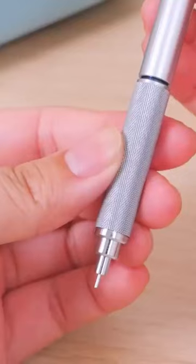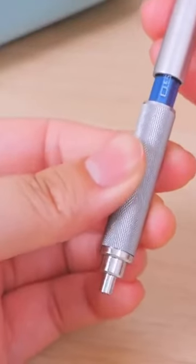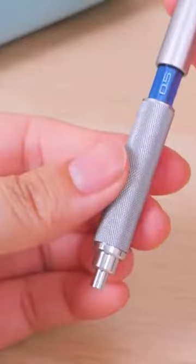Uni's Shift Pipe Lock Drafting Pencil combines form and function. It uses a unique shift and lock mechanism that keeps the pencil tip safe while on the go.